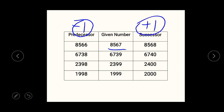In our first example we have 8,567. If we add 1 to it we get the next number, that is 8,568, and if we subtract 1 from the given number we get 8,566. So from that we can say that the successor is the next number and the predecessor is the previous number for a given number. It is simple.